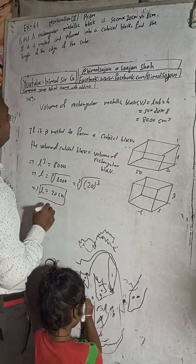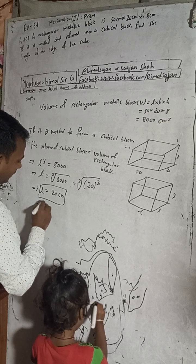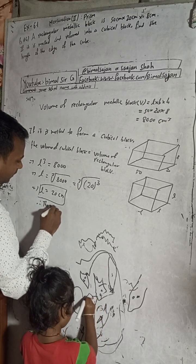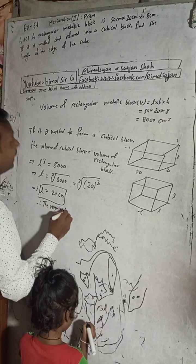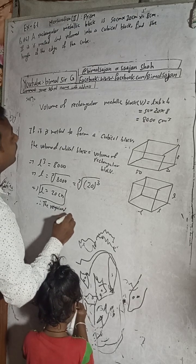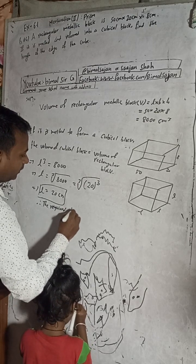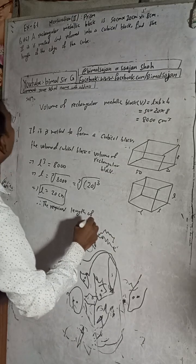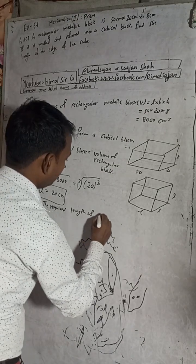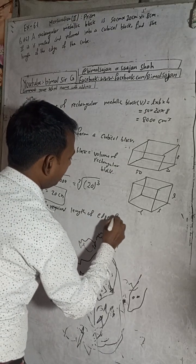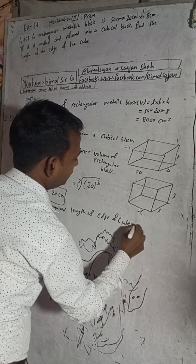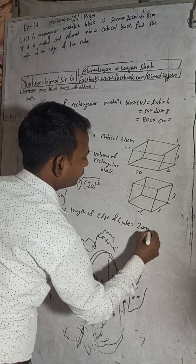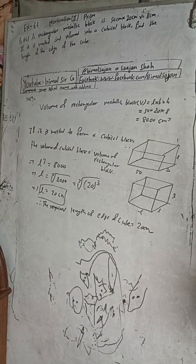Find the length of the edge. Therefore, the required length of the edge of the cube is equal to 20 cm. This is the solution for class 9 and 10 students. The answer is 20 cm.